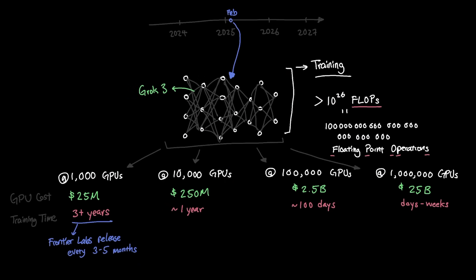What about 10,000 GPUs? In this case, your investment on GPU is $250 million, so 10x the investment from 1,000, and training time for Grok 3 is now looking at around one year. This seems like a decent compromise in cost and training time, but it's still not moving fast enough.